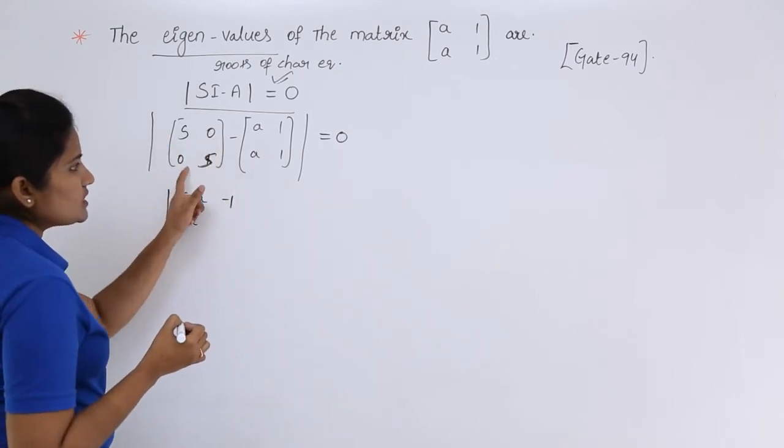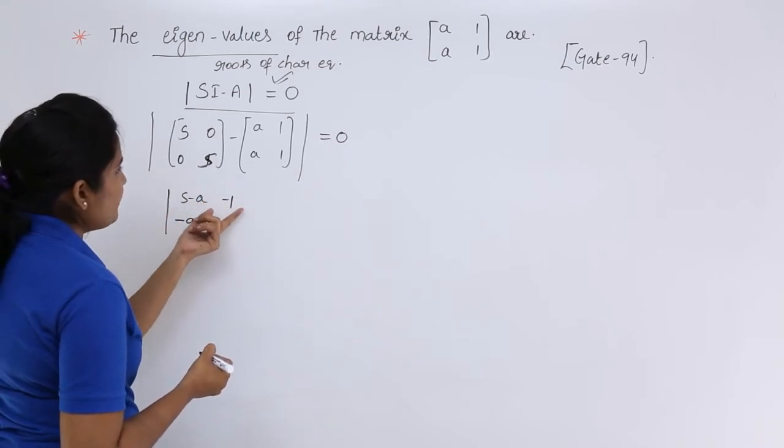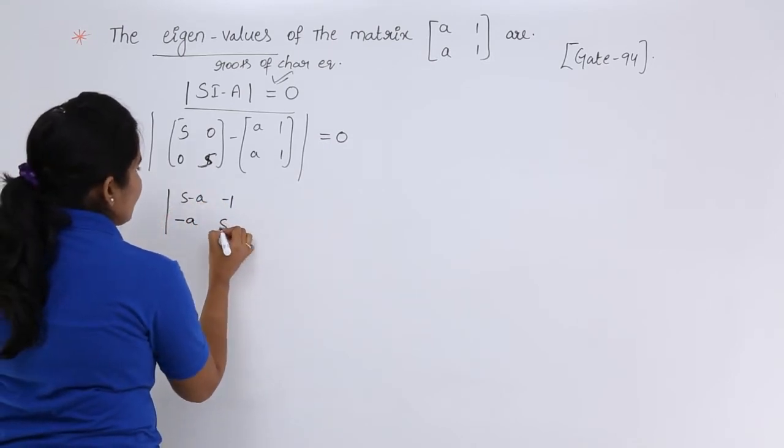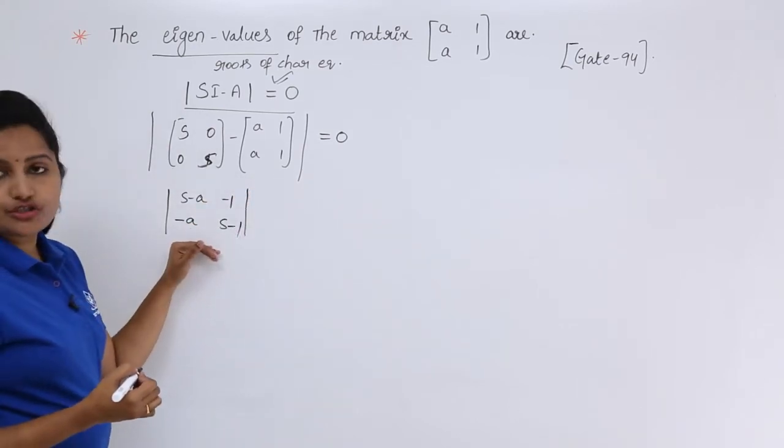So this is S 0, 0 S minus the given matrix, and this is S minus A, minus 1, minus A and again S minus 1. So this is the matrix you are going to get.